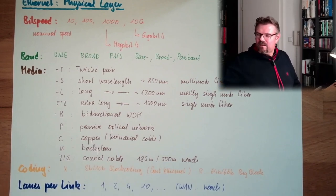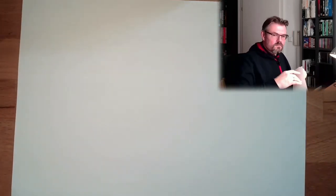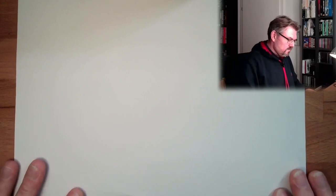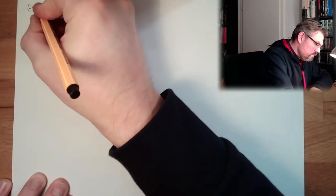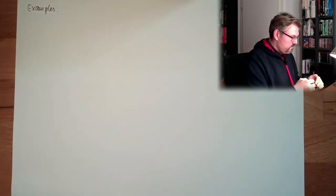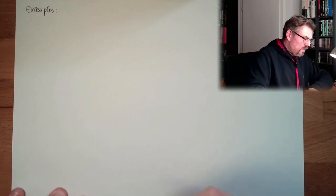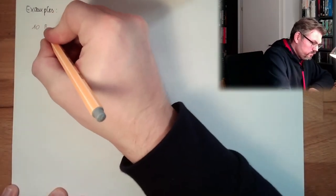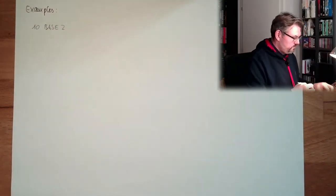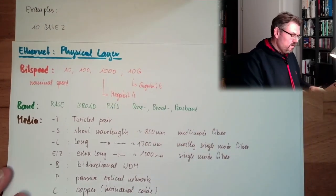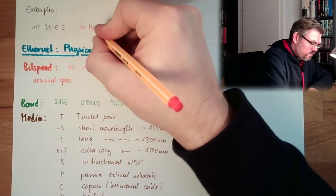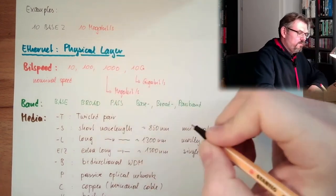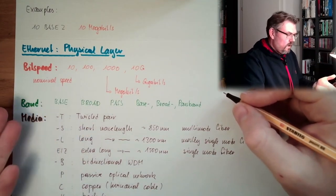So these are the names of Ethernet physical layers. So let's have a look at some examples. So we might have, for instance, a 10Base2. What does it mean? Let's have a look. 10 is the bit speed. So we have 10 megabit, 10 megabit per second.